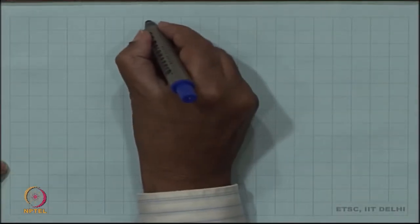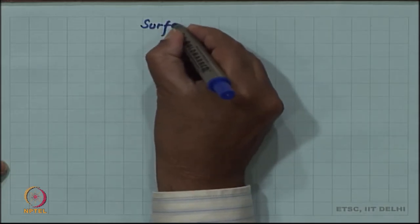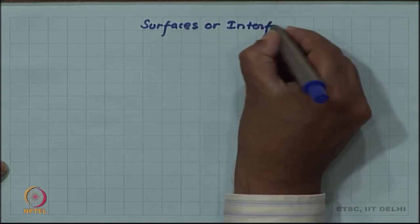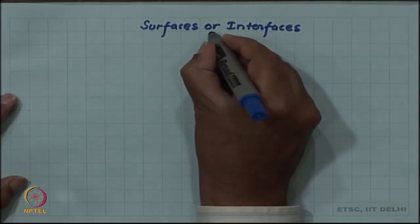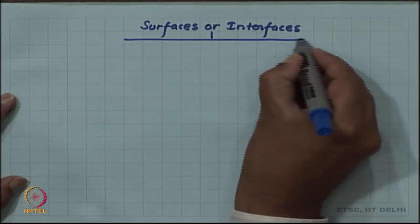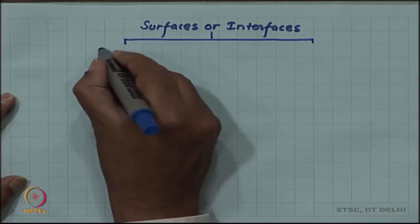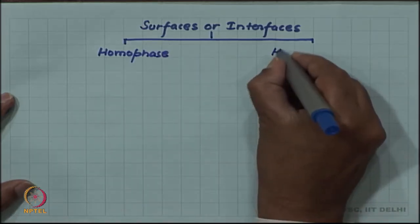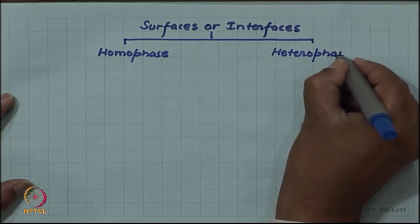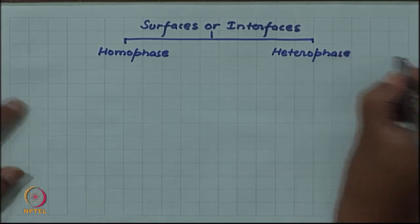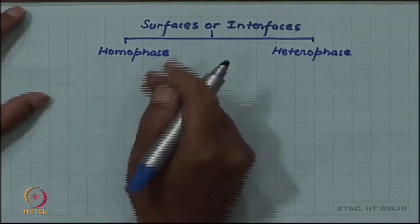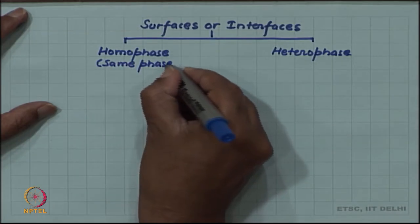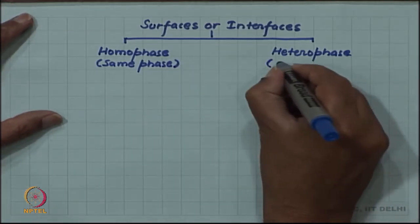Let us first have a classification of surfaces and interfaces in a crystalline solid. I will give you a classification scheme for surfaces or interfaces. Initially, let us divide them into homophase interfaces or heterophase interfaces. As the name suggests, homophase means the same phase will be present across the interface, whereas in heterophase, different phases will be present across the interface.